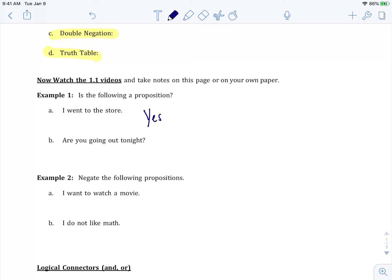Example 1b, are you going out tonight? Well that's a question so I already know it's not a proposition and also I have no idea what you're going to tell me, yes or no, so I don't have a complete understanding of the truth value, so this is a no.